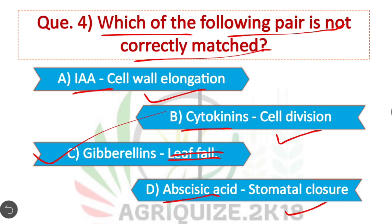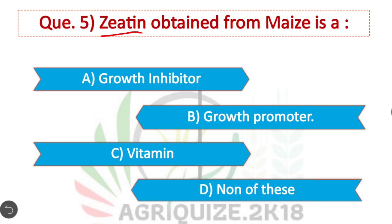Question 5: Gibberellin is a growth promoter. Option B is correct.